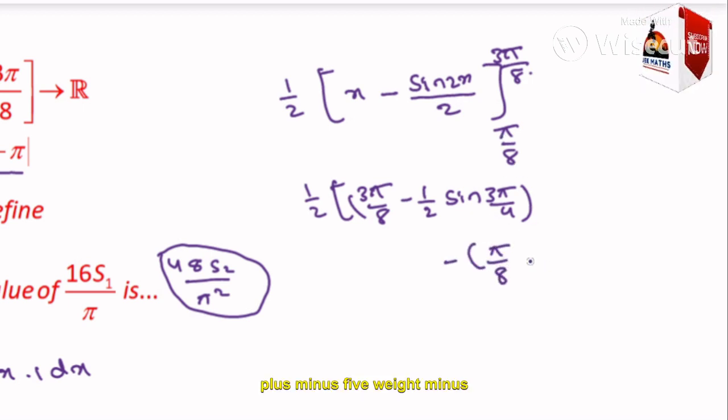x plus minus, x plus minus π/8 minus 1 by 2 times sin of π/8 times 2, so π/4. Close the bracket.